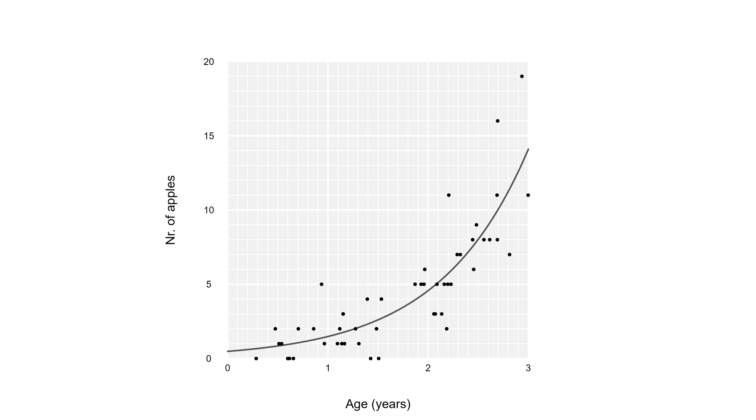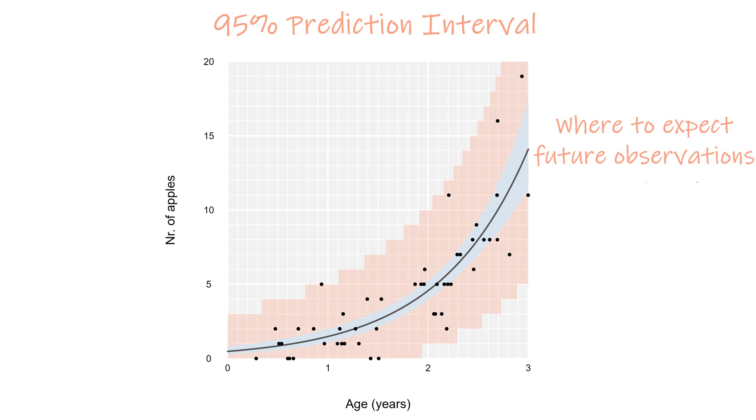then we can do similar things like we did with ordinary linear regression, like expressing the uncertainty of the relationship with a confidence interval, or predicting new observations with a prediction interval. In case you're wondering why the prediction interval looks like that, it's because counts are discrete, so a range of expected future counts is also discrete.